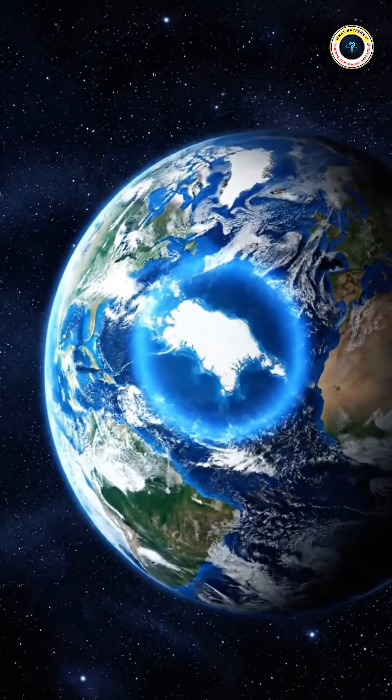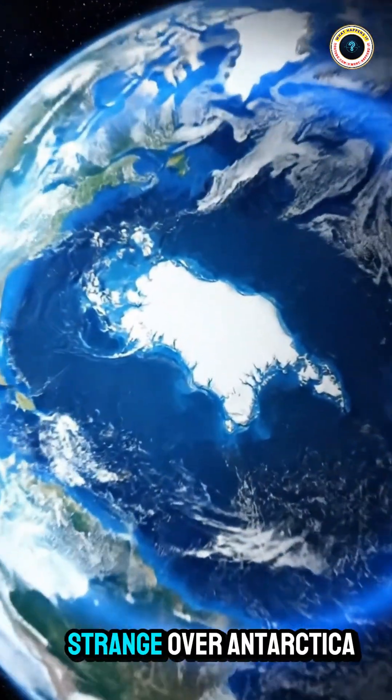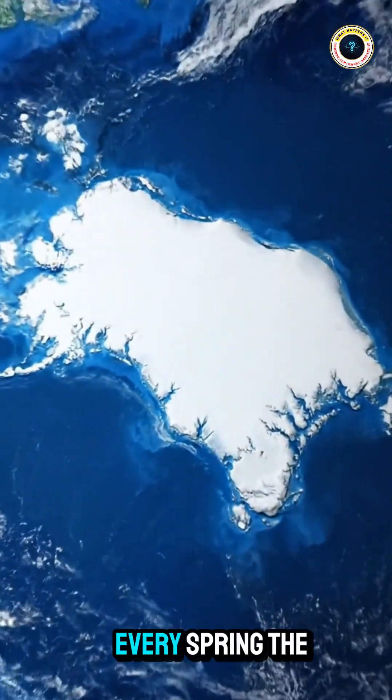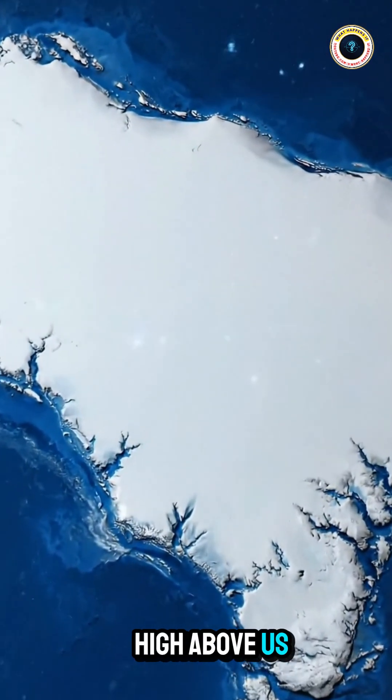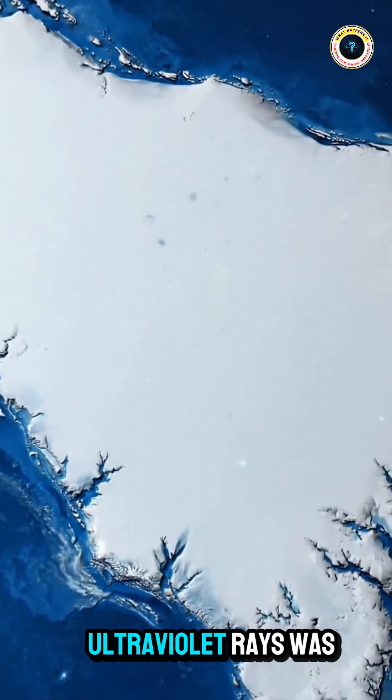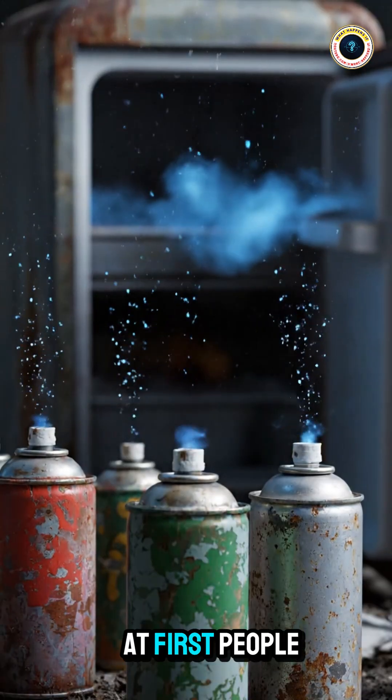Back in the 1980s, scientists noticed something strange over Antarctica. Every spring, the ozone layer, that thin shield high above us that blocks harmful ultraviolet rays, was vanishing.